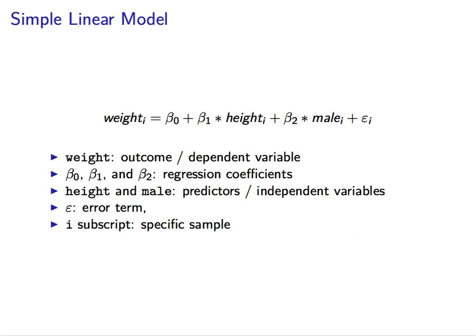So the error term for the i-th sample, or the residual, as it's sometimes called, is going to be the difference between the predicted weight for the i-th individual and their actual weight.